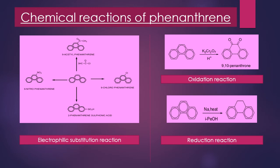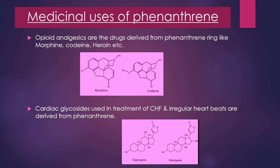Phenanthrene on acylation gives 9-acetylphenanthrene, and on chloromethylation gives 9-carboxyphenanthrene, which contains an aldehyde group at the 9th position. On reduction, phenanthrene gives 9,10-dihydrophenanthrene as an addition product, and on oxidation it gives 9,10-phenanthroquinone, which is a very important pharmaceutical agent.